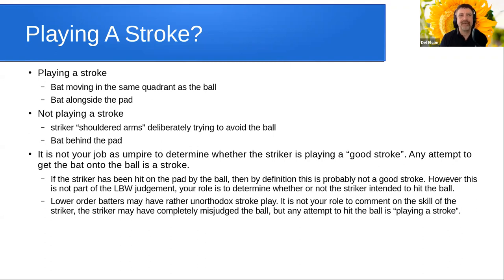A batter is not playing a stroke if they've shouldered arms — that means they've lifted the bat deliberately above their head and above one's shoulder, deliberately trying to avoid the ball. That is not playing a stroke. If the batter has stepped down the pitch and placed the bat behind the pad — that is, with the pad in front and the bat behind — that is also not playing a stroke.